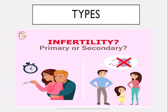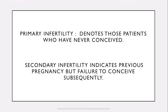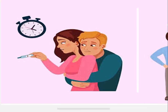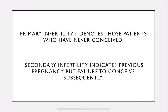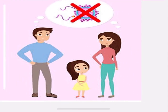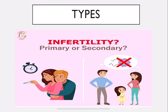Infertility is categorized into two types: primary infertility and secondary infertility. Primary infertility denotes those patients who have never conceived — she is married and after one or more years has not conceived. Secondary infertility indicates a previous pregnancy but failure to conceive subsequently. The couple already has a baby but the woman is unable to conceive again. Throughout her life never conceived: primary. Conceived but subsequently unable to conceive: secondary.